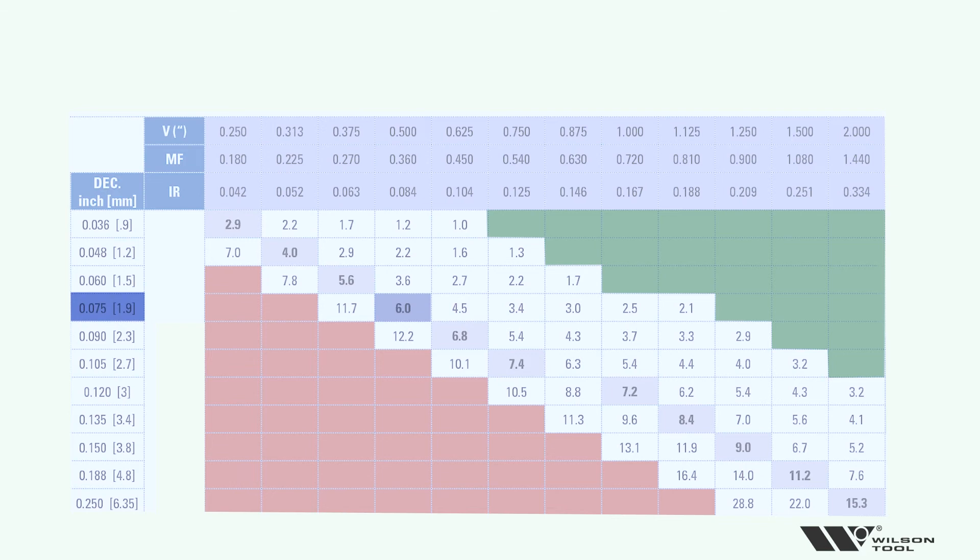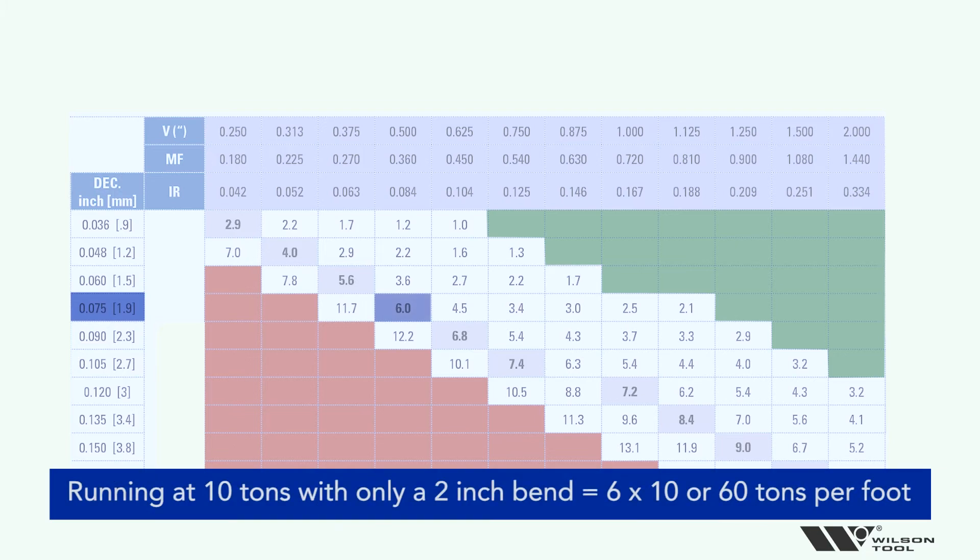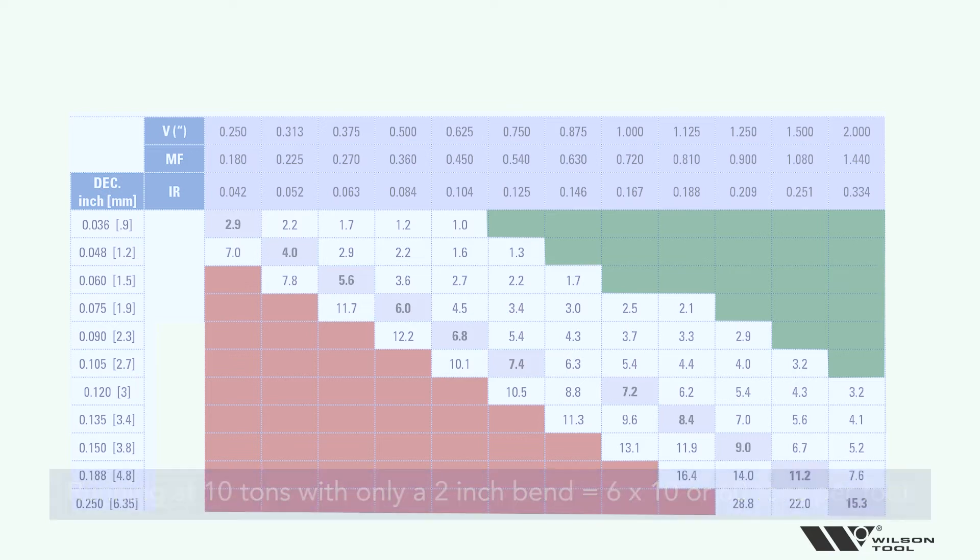Make sure when you do your tonnage calculation though, that six tons isn't being applied to something shorter than per foot. So if my machine tells me that I'm running at 10 tons, but I only have a two inch bend, that's really six times 10 to give you 60 tons per foot. That'll blow up a lot of tooling.